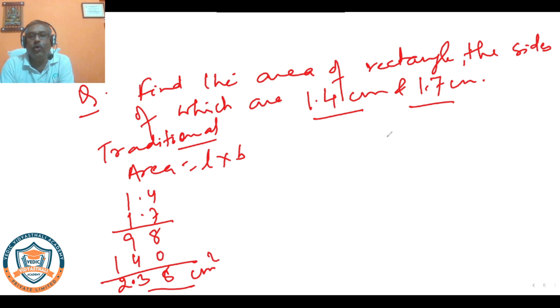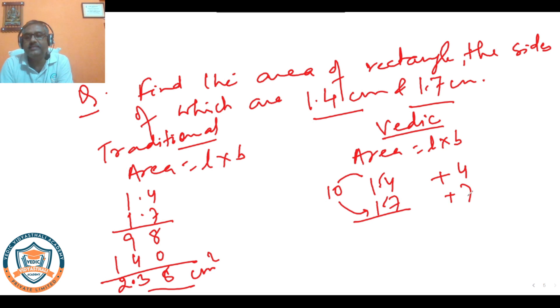Let us see by Vedic way how we can find. Area is same, L into B. Here the numbers are 1.4 and 1.7, we'll ignore decimal for the time being. These numbers are near 10. 14 is 4 more than 10, and 17 is 7 more than 10. Do the criss cross: 17 plus 4 or 14 plus 7, both are same, equals 21. This side 7 into 4 is 28, and only one digit is there in 10, so only one digit is allowed.